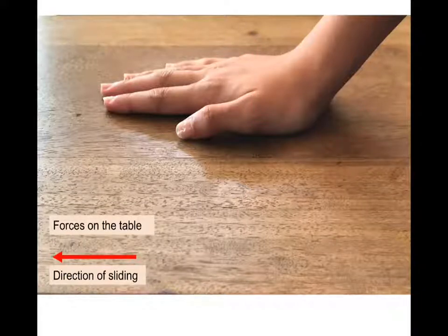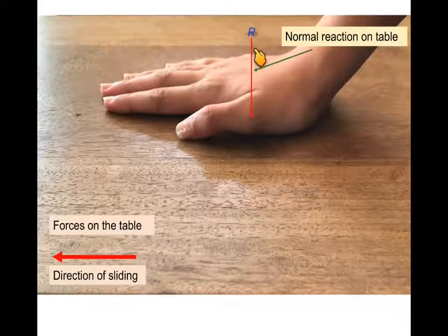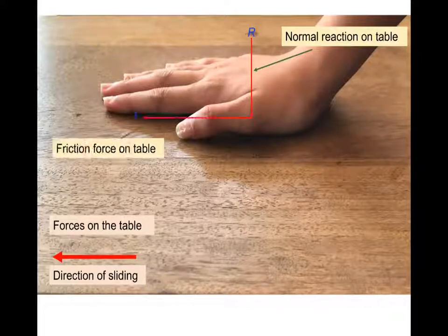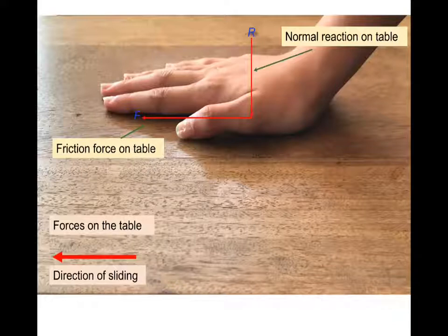Now considering the forces on the table, you're going to have the opposite reaction from the one going up, the table onto the hand, acting on the table. And also because friction was acting that way on the hand, it will act this way on the table. So here we're just considering the forces on the table.